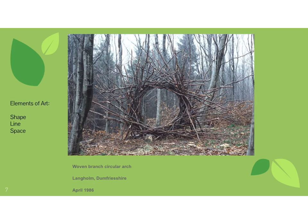The element of art really being used here is shape. He's created a circle, which also creates negative space inside — it looks like a portal, something really cool that lets your imagination go crazy. He used straight sticks woven together to create that circle shape and the negative space inside. Those are the elements of art really at work here. These are woven branches, done in 1986.